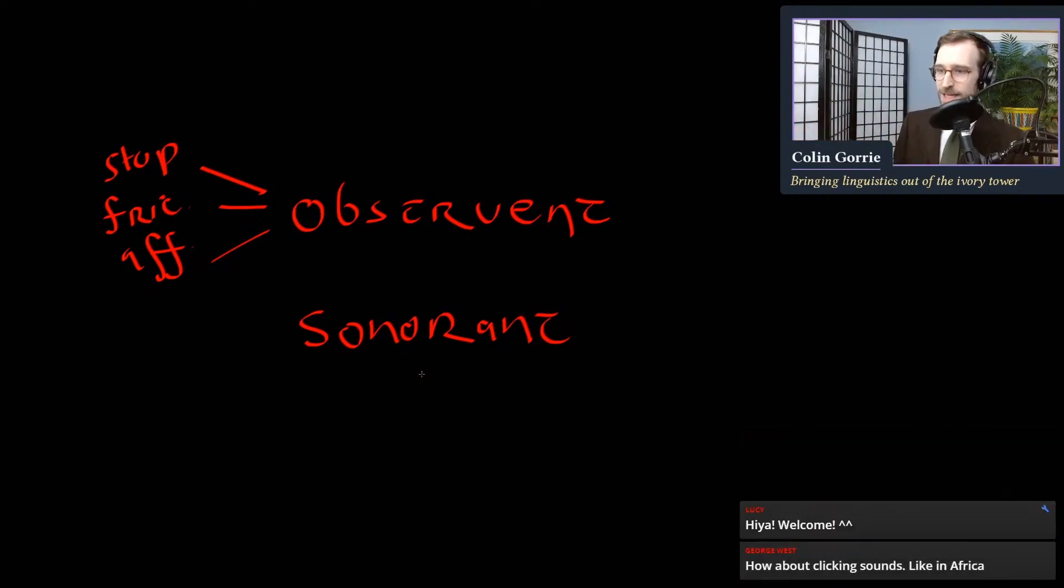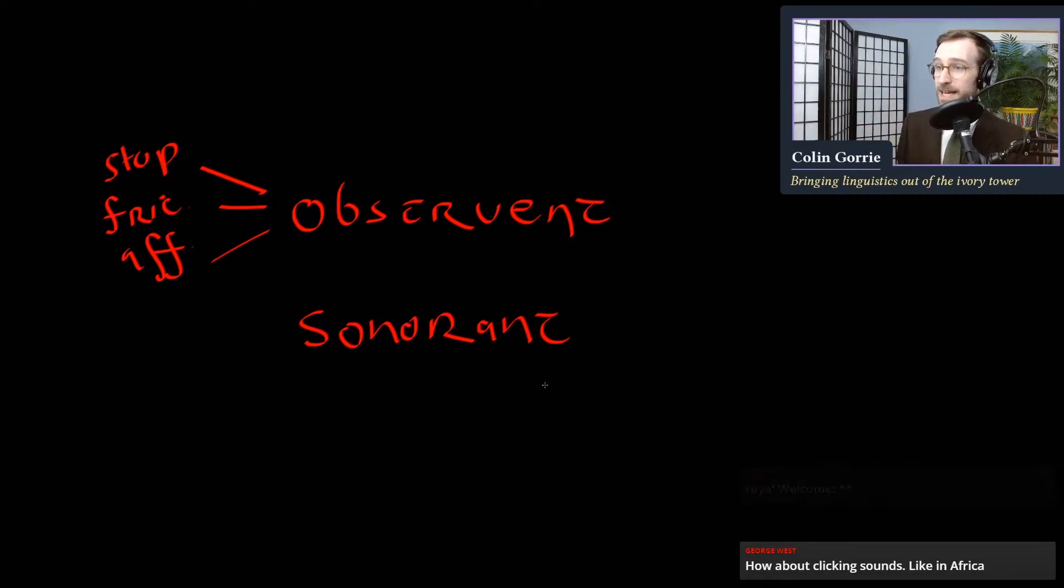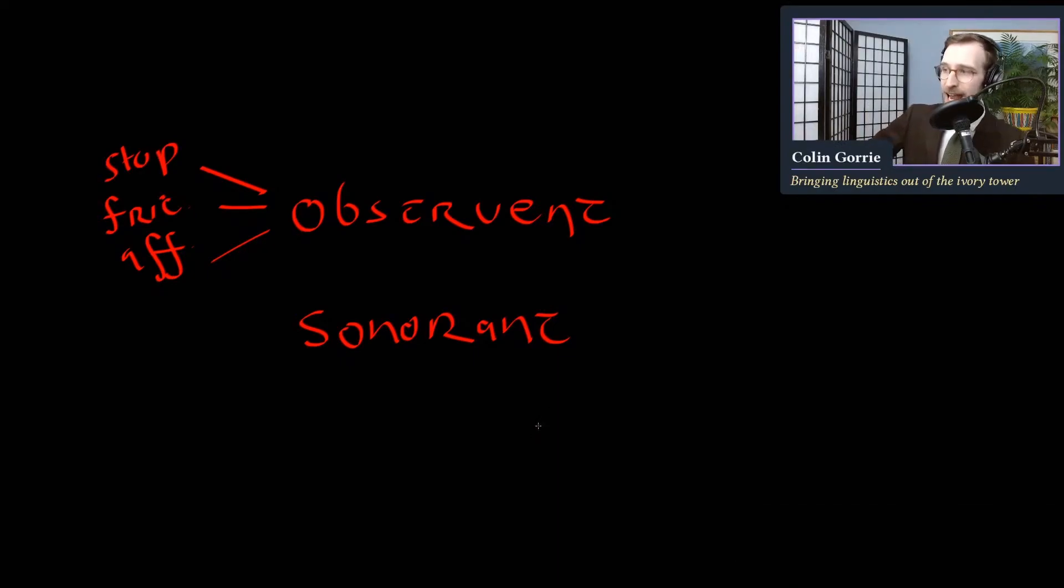Sonorants are produced with continuous airflow. So something like a nasal - ana, ama, anga, anya - where airflow is coming through the nasal passage. Liquids - ala, ara. Semi-vowels - aya, awa. These are all sonorants.